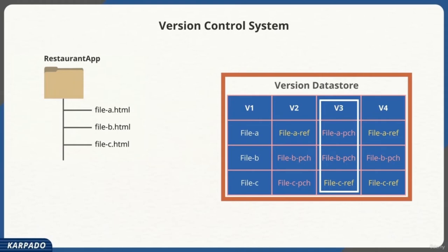There are many VCS software options available in the market — Git, Mercurial, SVN, etc. They all differ slightly in terms of how they manage historical data, but in general this is how they manage historical data.